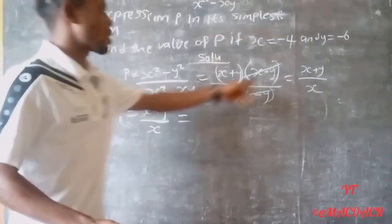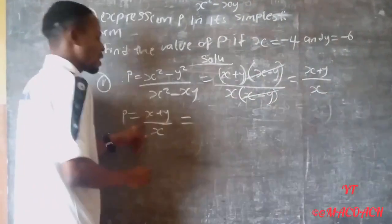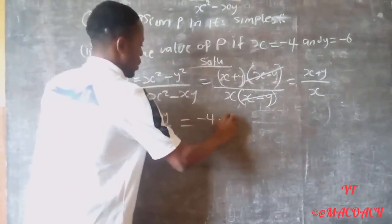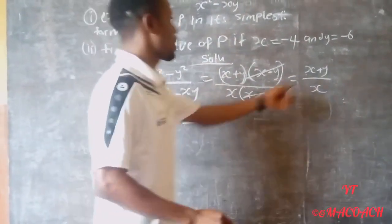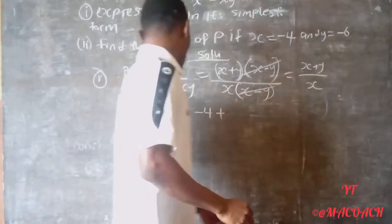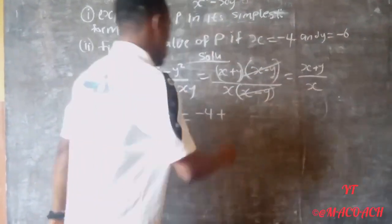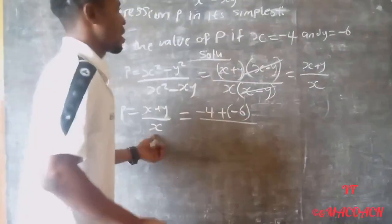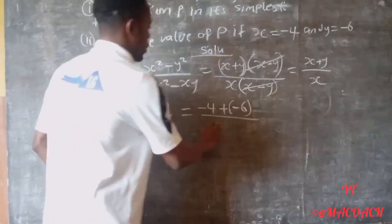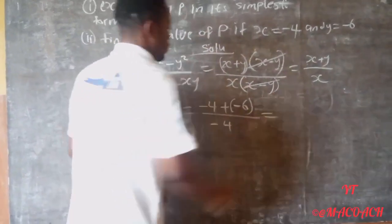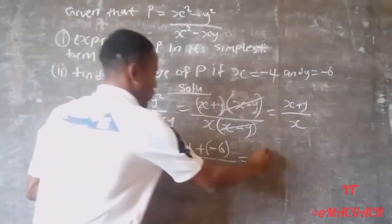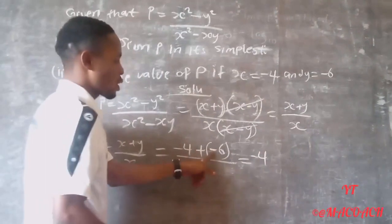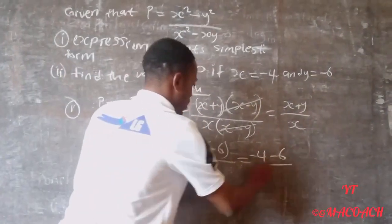So P equals minus 4 plus minus 6 divided by minus 4. That's minus 4 minus 6 divided by minus 4, which equals minus 10 divided by minus 4, giving us 5 over 2.